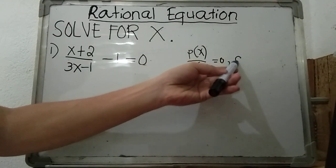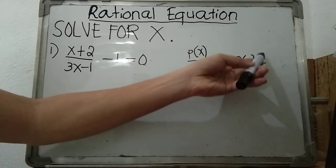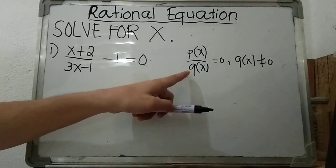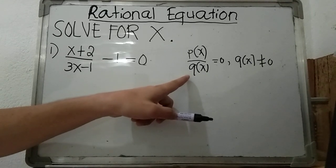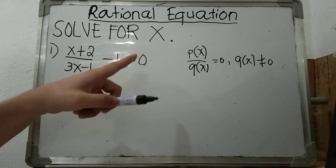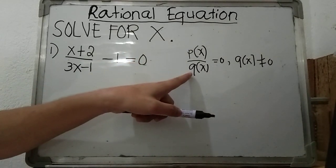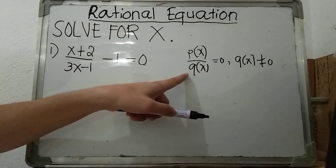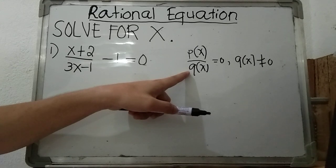Take note: our denominator q of x should not be equal to zero, otherwise it will become undefined. In short, this is one of our major assumptions — that our denominator should not be equal to zero to avoid undefined.